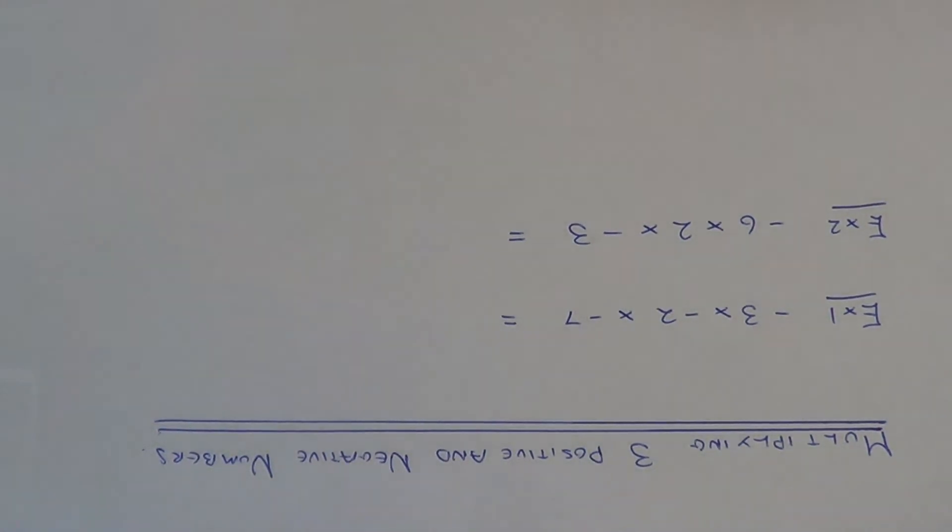Before you attempt multiplying three positive and negative numbers, first make sure you can multiply and divide two positive and negative numbers. Let's have a look at example one.